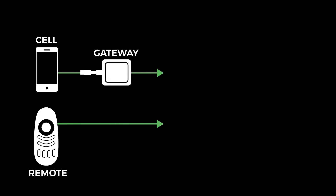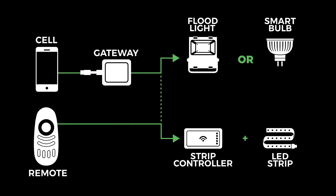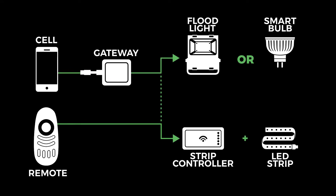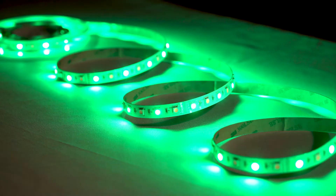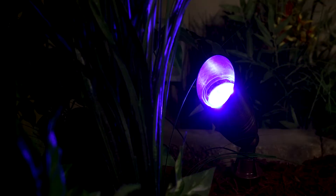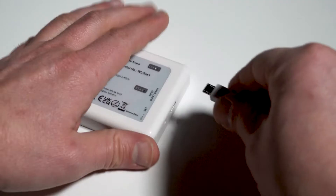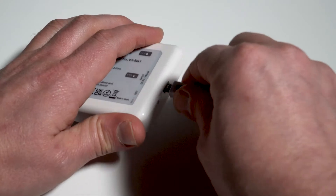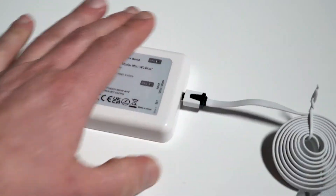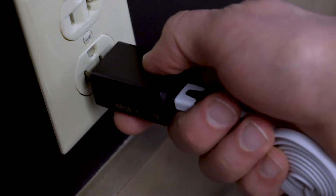A gateway or remote is required to make full use of any of the other myBoxer products. This gives you control over color, brightness, saturation, and more. To get started, have your gateway along with a power adapter plugged in.